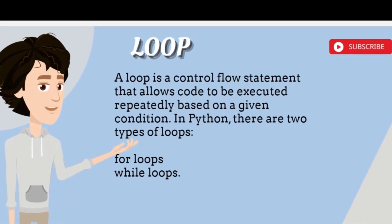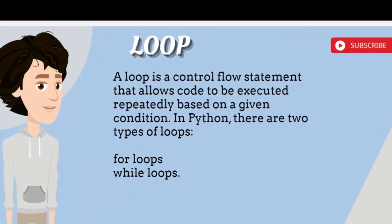Loop. A loop is a control flow statement that allows code to be executed repeatedly based on a given condition. In Python, there are two types of loops: for loops and while loops.